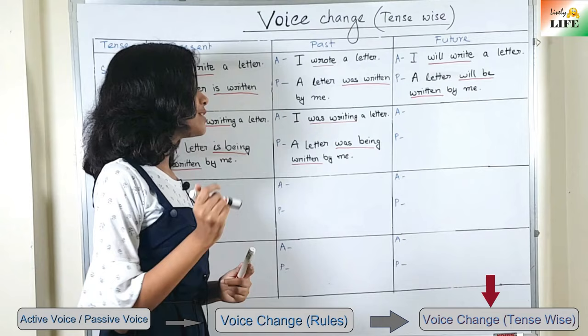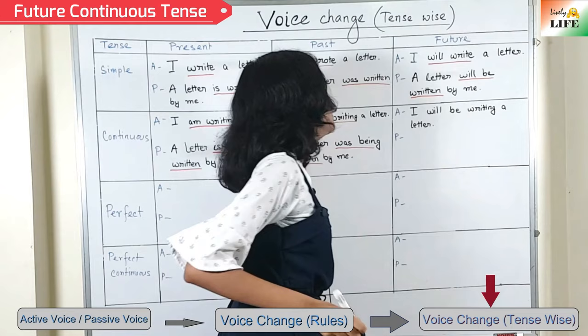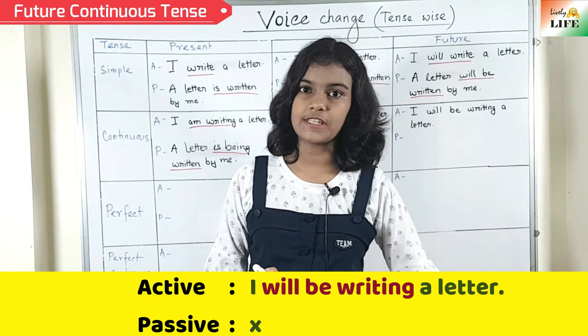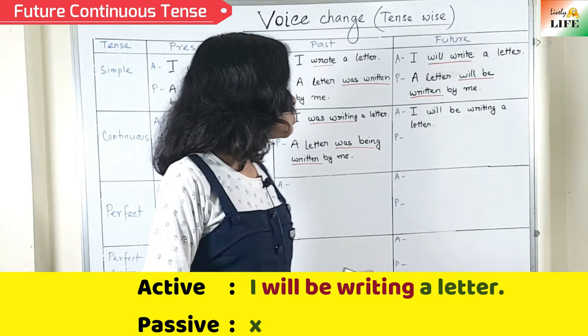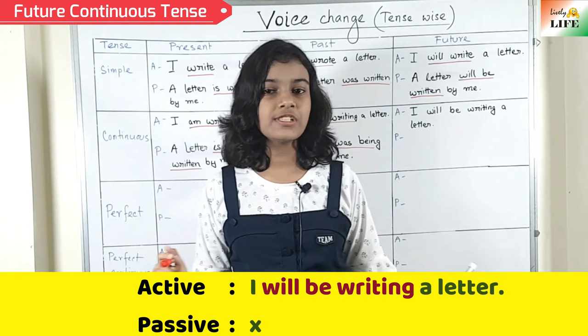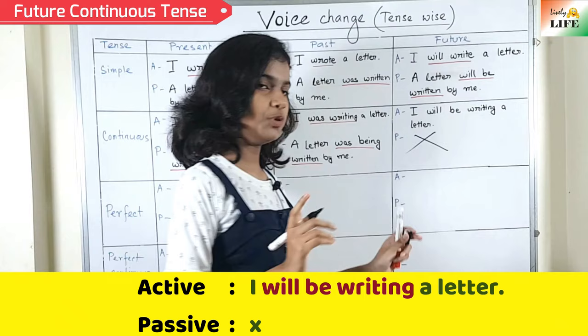Future continuous tense: active voice is 'I will be writing a letter.' In daily life, we do not generally use the passive voice of a sentence in future continuous tense because it sounds really confusing — it would be something like 'A letter will be being written by me,' which is too confusing. So we do not use the passive voice of future continuous tense — we can skip this.